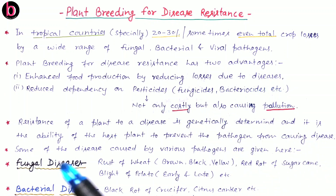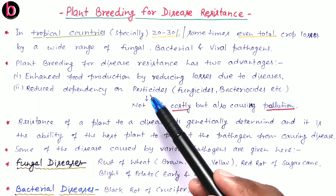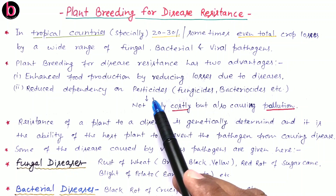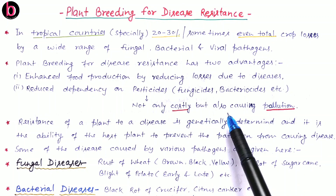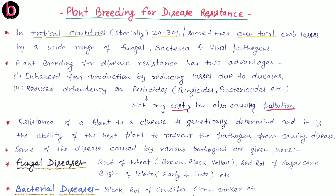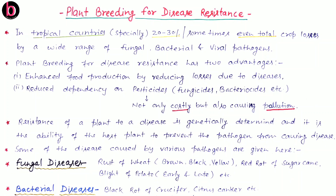Producing disease-resistant varieties has two advantages: first, we can enhance food production by reducing losses caused by disease; second, we can reduce dependency on pesticides. Pesticides are chemicals used for killing fungus, bacteria, or other substances, but use of pesticides is not only costly — it also causes air pollution, water pollution, and soil pollution. Resistance in a plant for any disease is mainly because of its genetic combination.